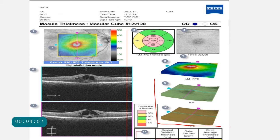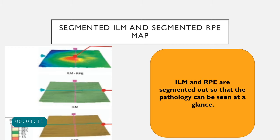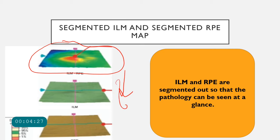After the 3D map, we have the segmented ILM and segmented RPE map. These two segmented images provide a 3D view of the internal limiting membrane and the retinal pigment epithelium respectively. Any pathology in the ILM or RPE can be seen at a glance. For example, if drusens are present — which sit below the RPE — you can see elevations or bumps on the RPE segmented map. Similarly, any problem in the ILM can also be seen on the ILM segmented map.